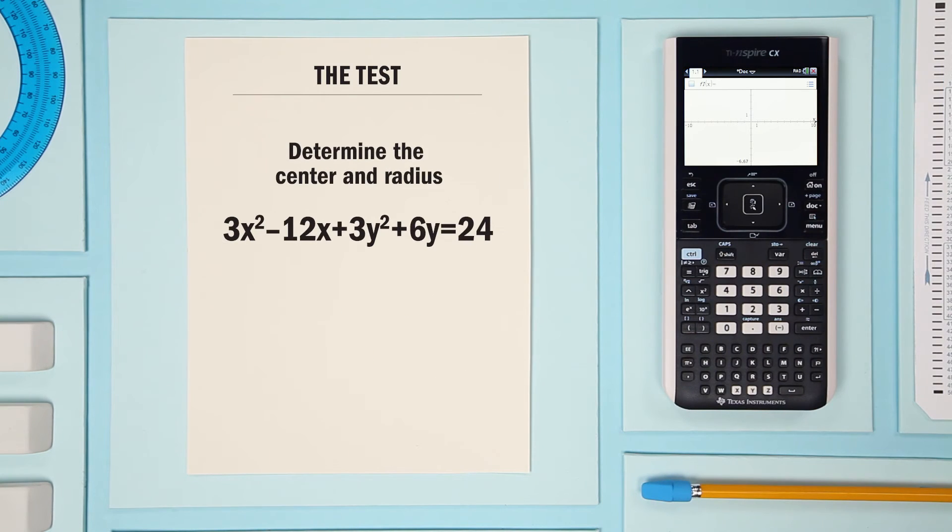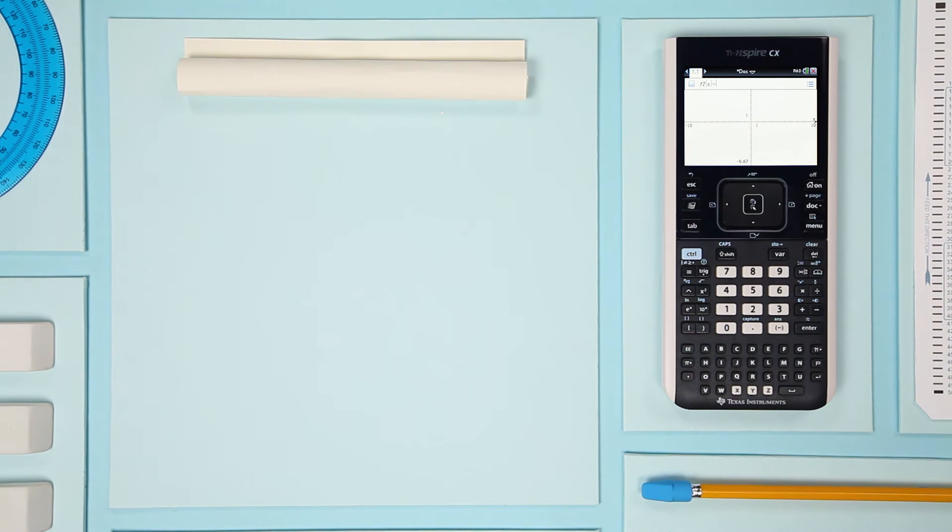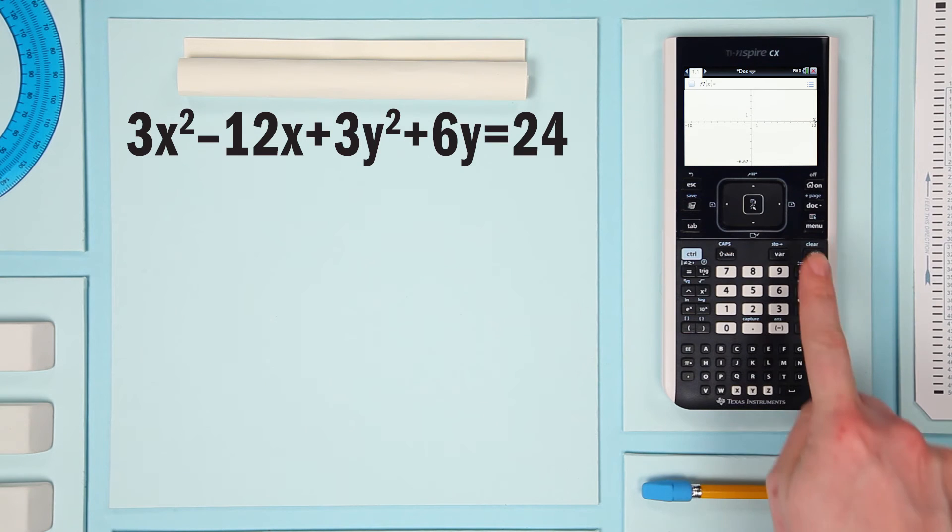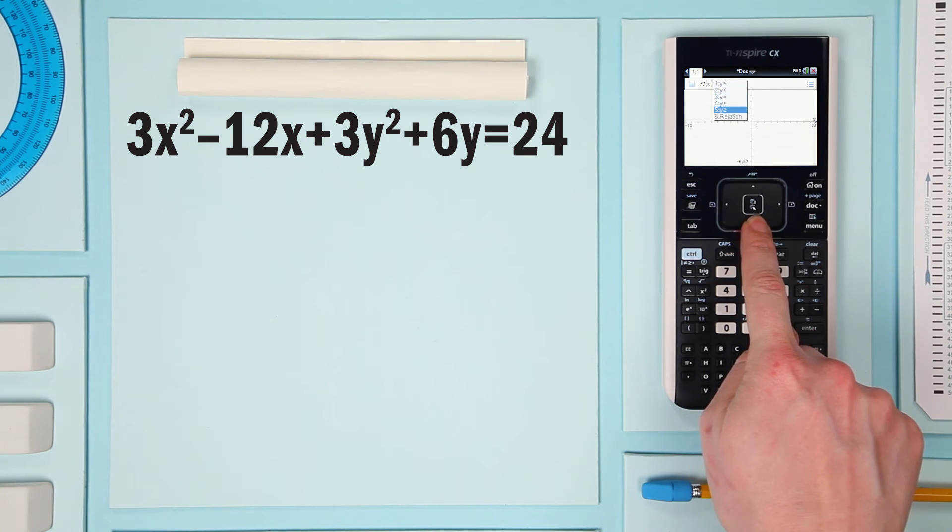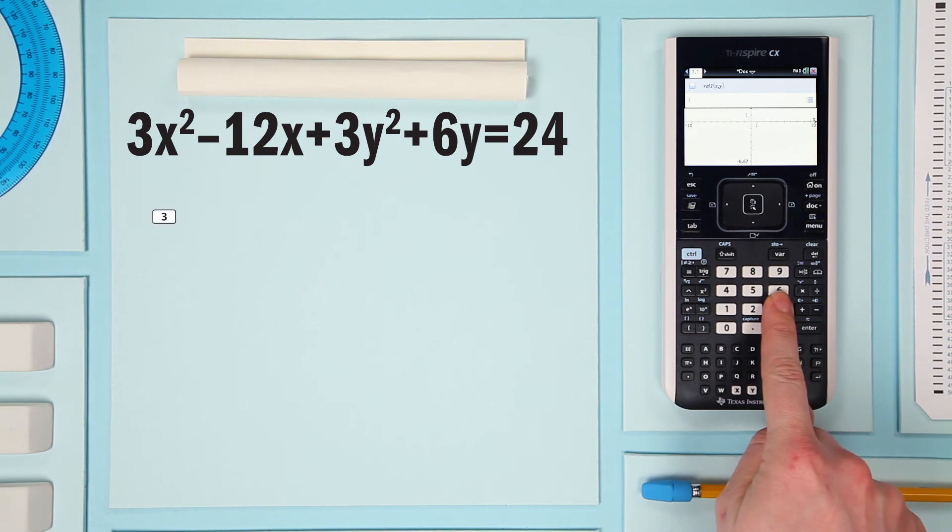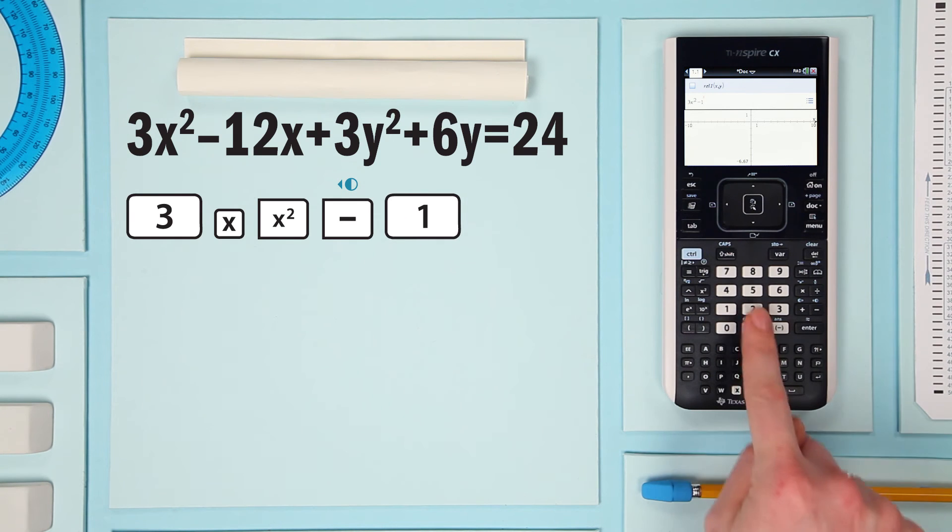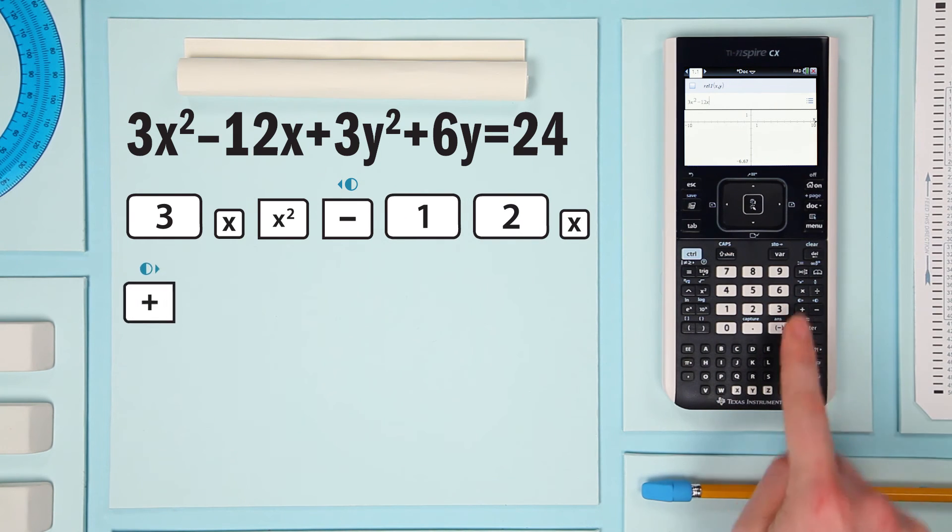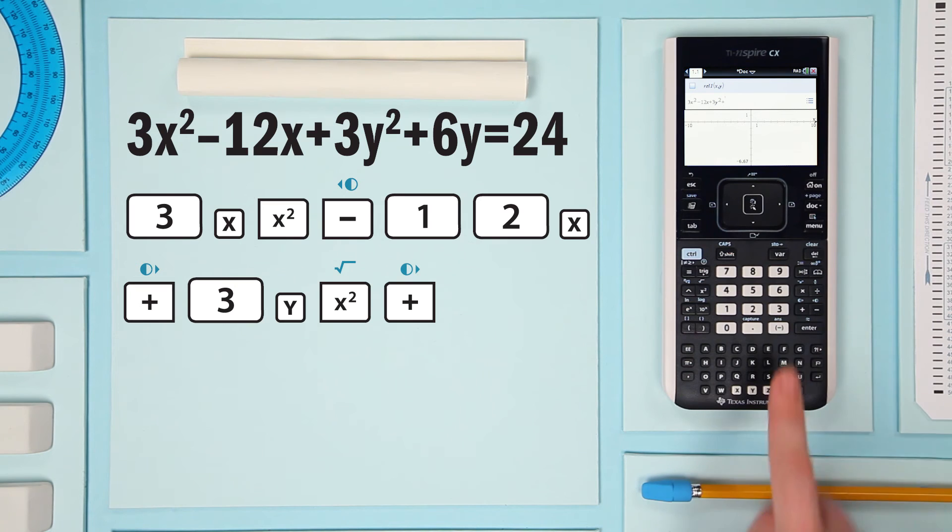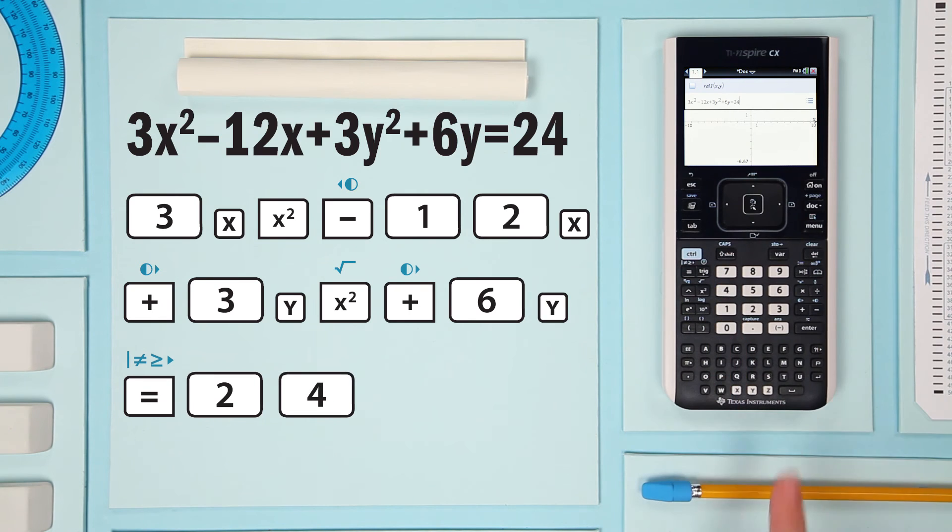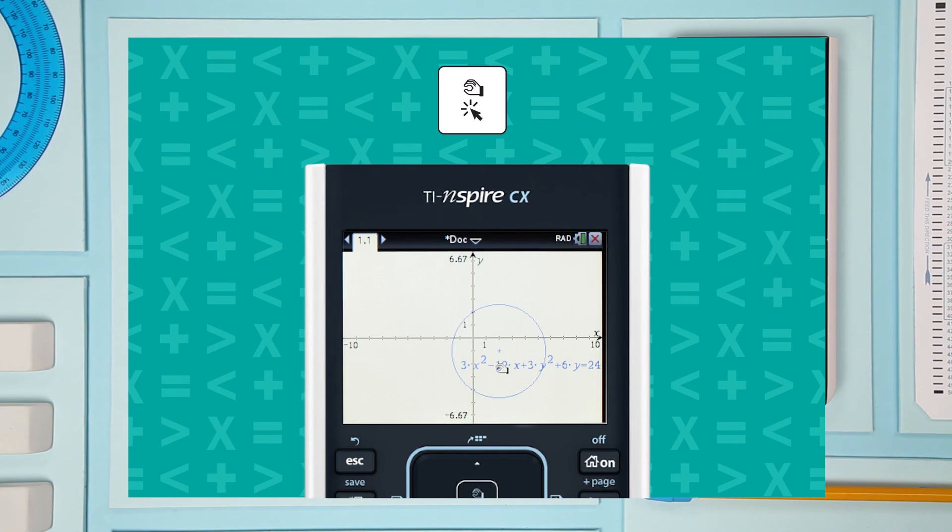Great! Let's do another circle. I'll go a little faster this time. Okay, here we go. 3x squared minus 12x plus 3y squared plus 6y equals 24. Choose the label with your cursor and move it out of the way.